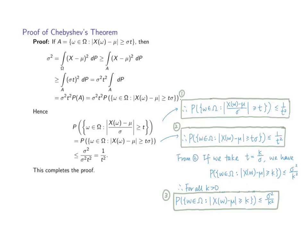Therefore, the perfect square of x minus mu has a value greater than or equal to the perfect square of sigma times t, so this integral is greater than or equal to this integral. And this is a constant, so after moving it out, it is to integrate 1 with respect to p over the event A, and this represents the probability of A. Therefore, we get sigma squared equals sigma squared times t squared times the probability of A — which is the probability of the event containing all elements from omega satisfying the absolute value of x minus mu greater than or equal to t times sigma. After rearranging, we get that this probability of the event is less than or equal to 1 over t squared.